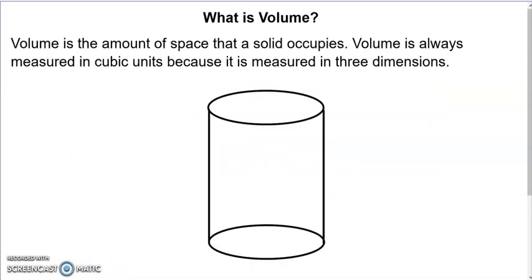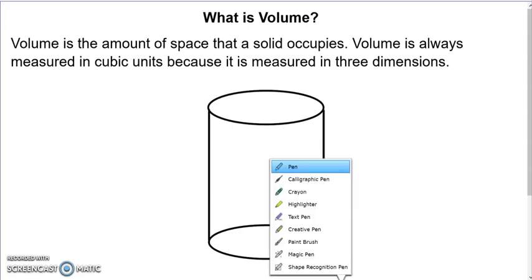Now, I said we were going to find volume. What is volume? Volume is the amount of space that a solid occupies — another way of looking at it, it's how much stuff this cylinder will hold, how much I can stick inside it. We measure volume in cubic units because it takes three dimensions: length, width, and height.